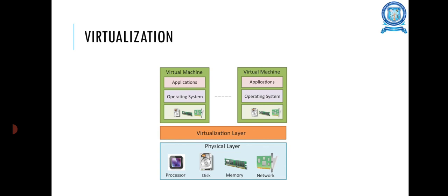This is the illustration of the virtualization concept. It uses virtual machines that are partitioned, and each machine contains applications and operating systems. The next layer is the virtualization layer, followed by the physical layer, where processor, disk, memory, and networks are available.